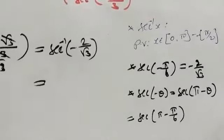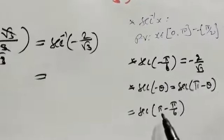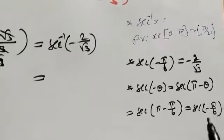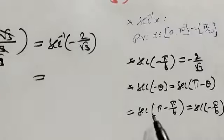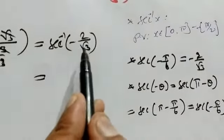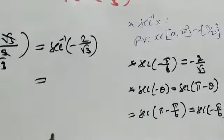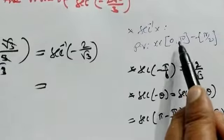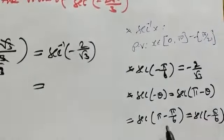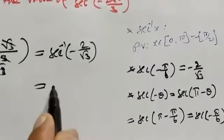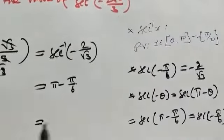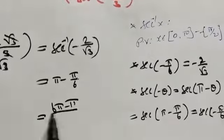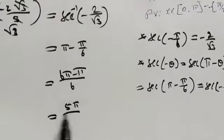Sec of 180 minus 30 equals sec of 150. This gives us the interval calculation: pi minus 5 by 6 equals 6 pi minus 5, which is 5 pi by 6.